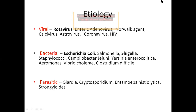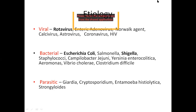For bacterial causes, the most common bacteria causing acute watery diarrhea is E. coli. E. coli has various strains: enterotoxigenic E. coli (ETEC), enterohemorrhagic, and enteropathogenic. Enterotoxigenic is the most common cause of acute watery diarrhea, whereas enterohemorrhagic is the most common cause of persistent diarrhea.